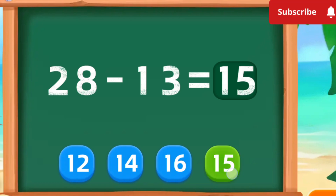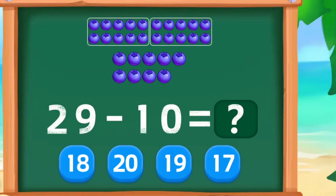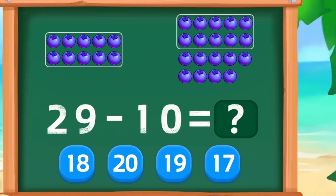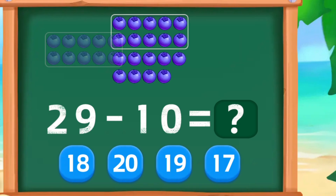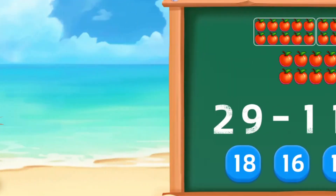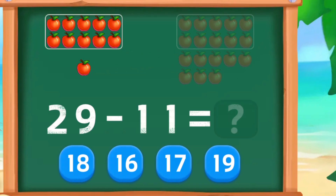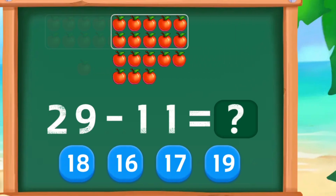Select the correct number. 29 minus 10 is 19. Great job. 29 minus 11 is 18. Wonderful.